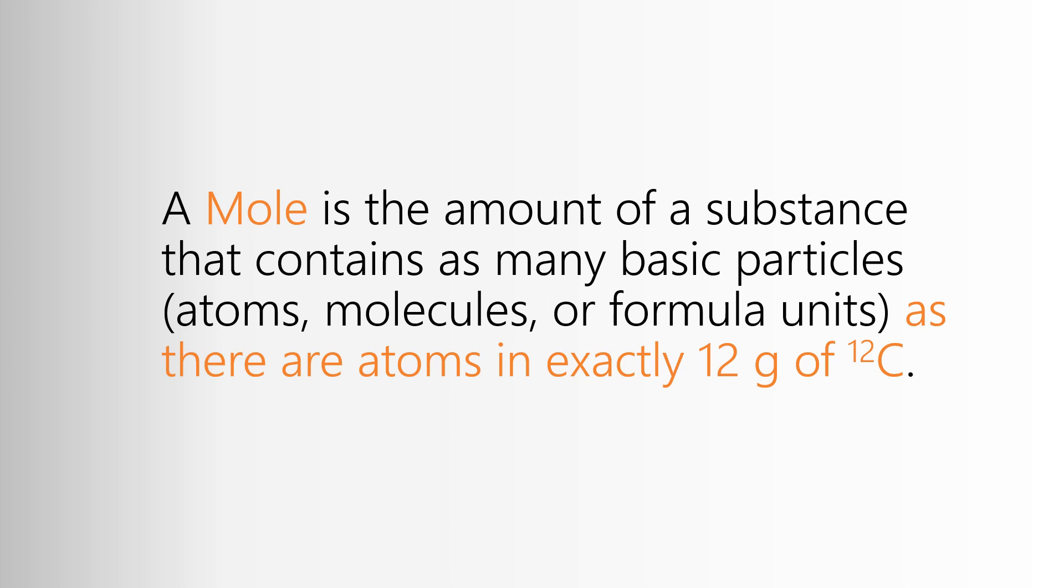That means that the number you generated in the relative atomic mass exercise, that's the number of AMUs per an atom of that material. But if you convert that number to grams, that's the number of grams for one mole of that material. That relative atomic mass at the bottom of the entry in the periodic table is both the mass in AMUs for an atom of it, and the mass in grams for a mole of that element.